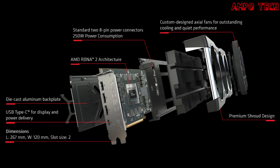This graphics card or eGPU features custom design axial fans for outstanding cooling performance, standard two 8-pin power connectors for 250 watts power consumption, and the new AMD RDNA2 architecture. It also has a premium shroud design with a die-cast aluminum backplate, a USB Type-C port for display and power delivery, with card dimensions of 256 x 120 mm, 2-slot.